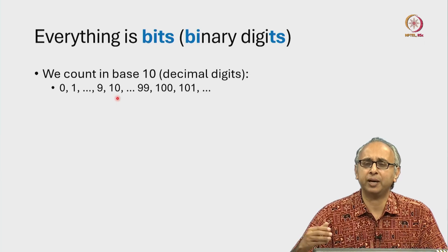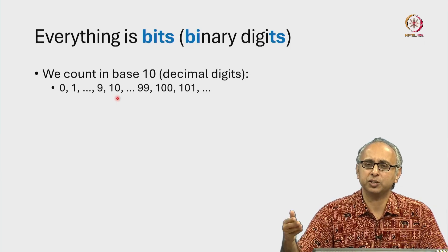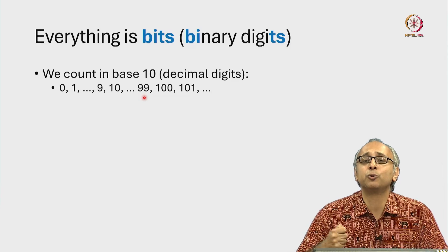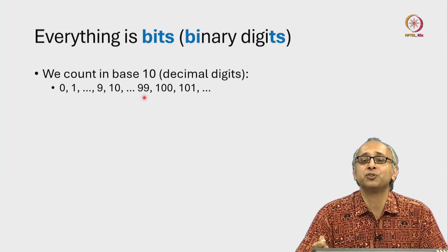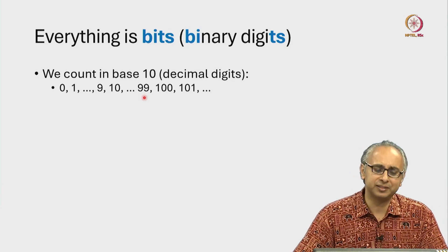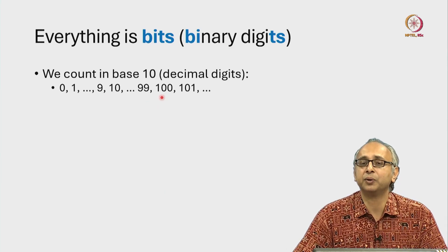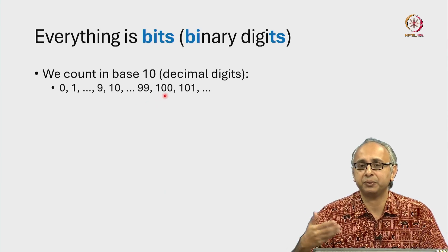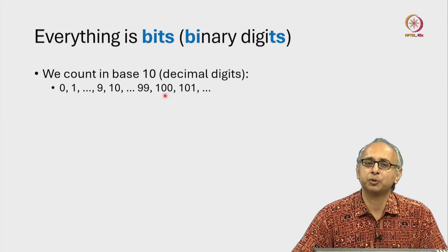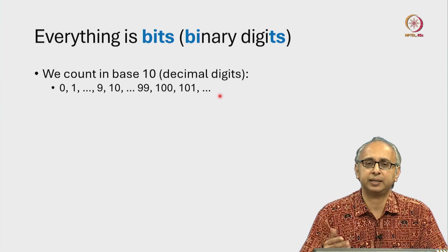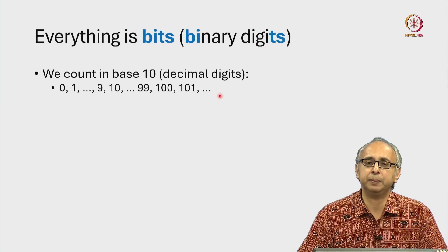After 10 we write 11, 12 and so on, all the way up to 99, and then again we have run out of digits. So we play the same sort of trick we did when we ran out of digits earlier — we write 1, 0, 0 and that we read as 100, and then we proceed. And you are of course comfortable with counting in base 10.